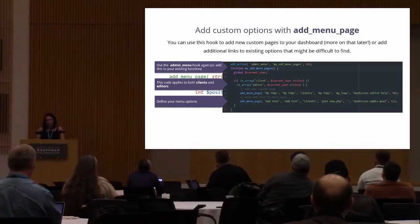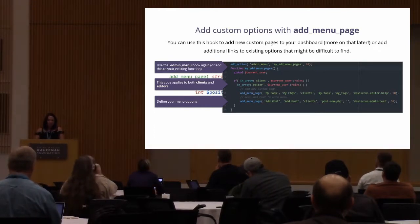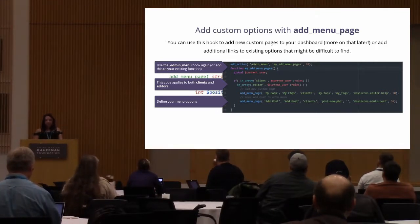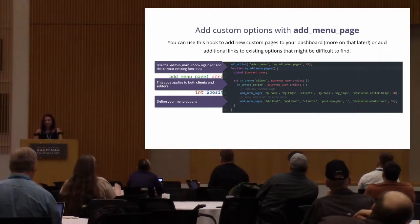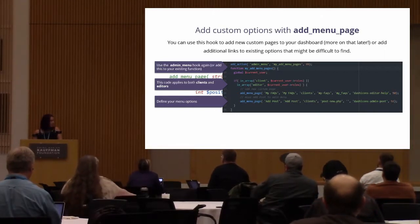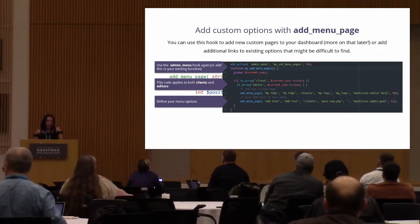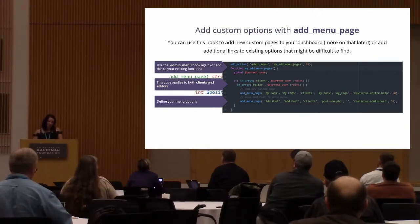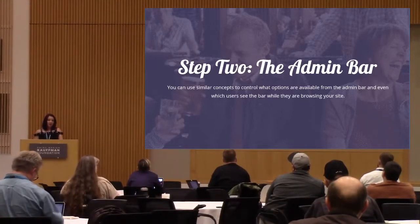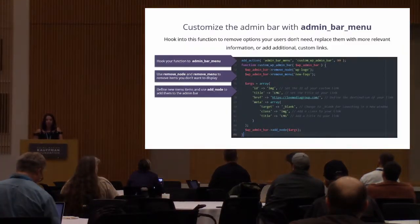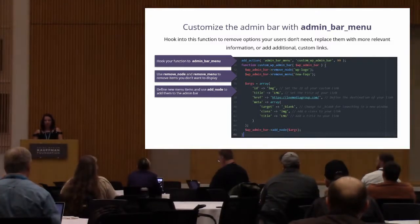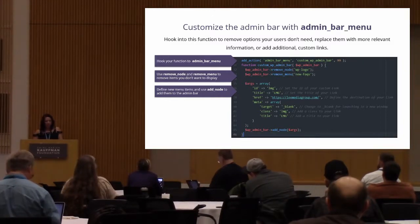Adding links goes with the admin menu hook as well, or you can add it to your previous function. This example applies to clients and editors. I've got two menu options: the first is for a custom page, and the second is an example of moving the Add Post option out to the main menu instead of it being nested under Posts. Once you've done that, you can also do some things with the admin bar, which is the black bar at the top that you see when you're logged in.